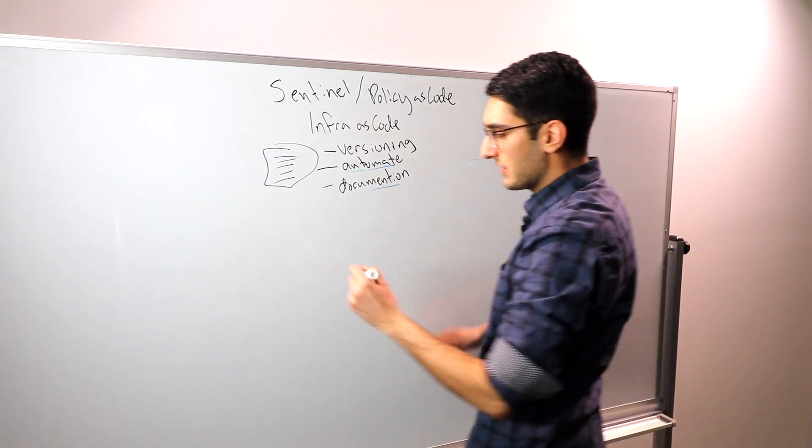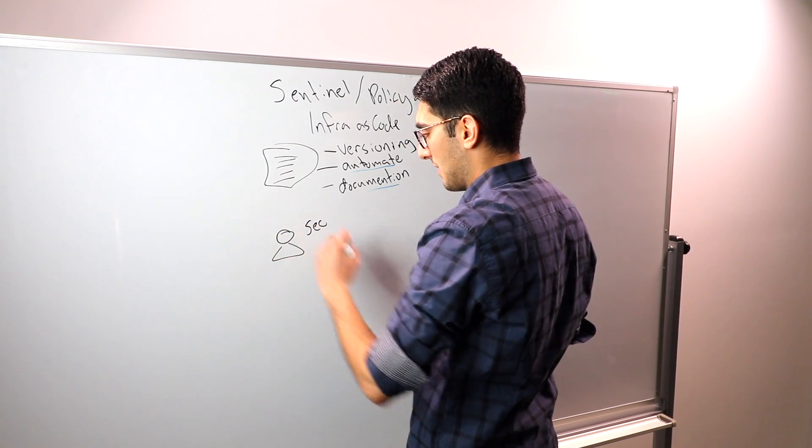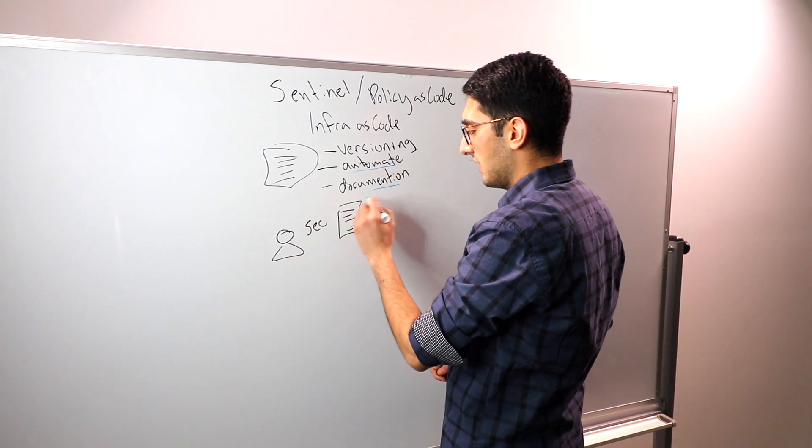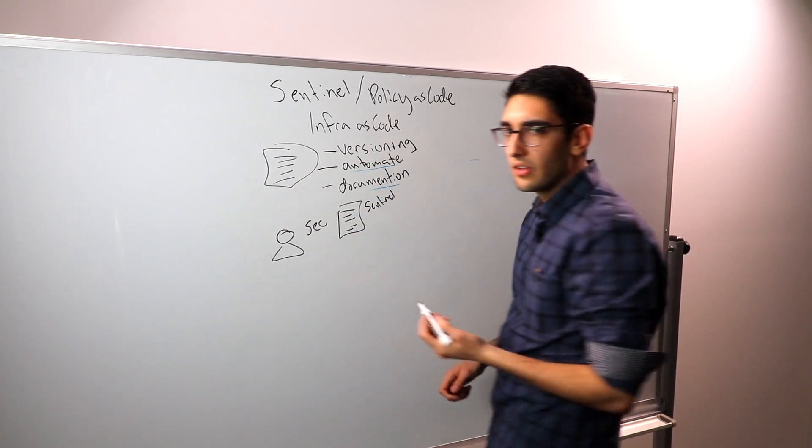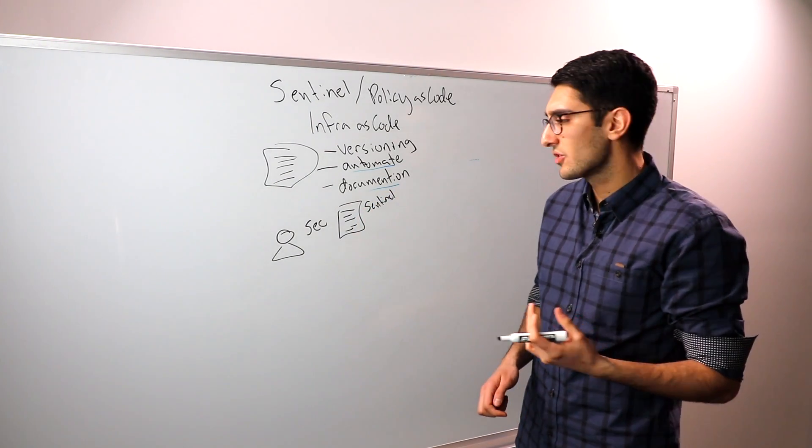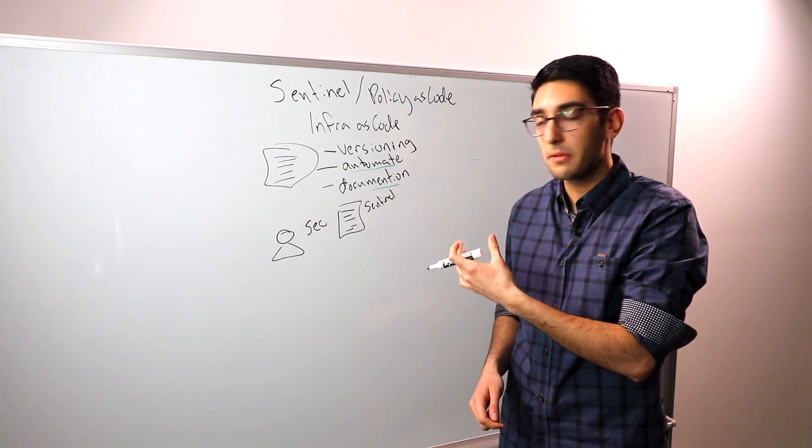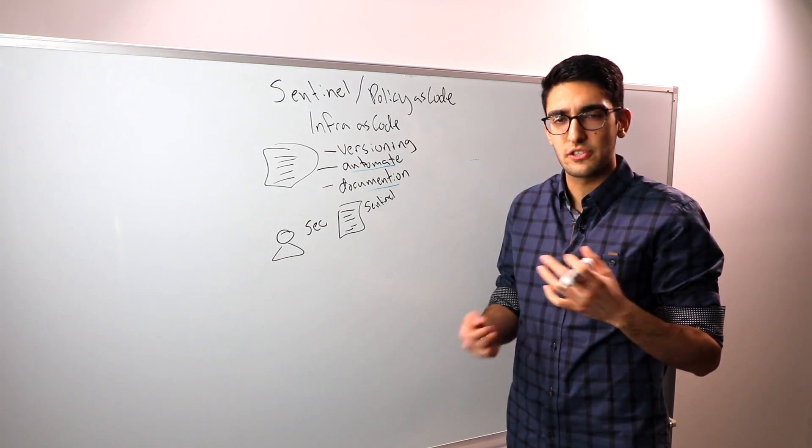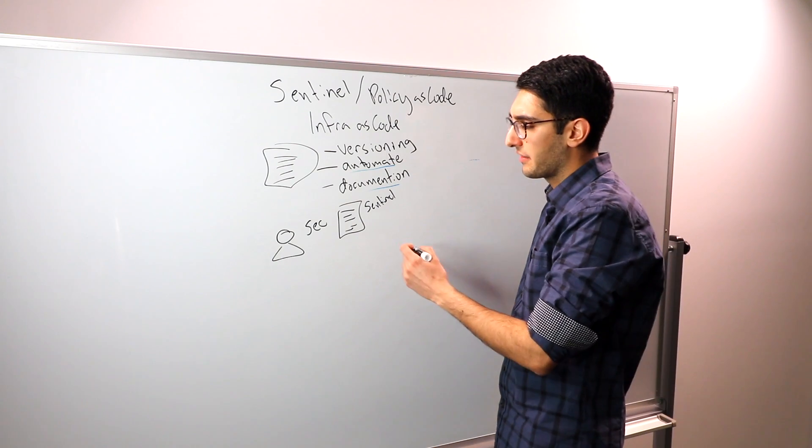We have a series of policy authors, which might be security as an example. And they're going to commit to writing out their policies in Sentinel language. Sentinel is meant to be a very high-level, easy-to-learn programming language. It was specifically built in conjunction with customers who had this problem, and they wanted non-developers to be authoring these policies. So it's designed for security and compliance people with some familiarity, but who aren't necessarily programming experts to author.